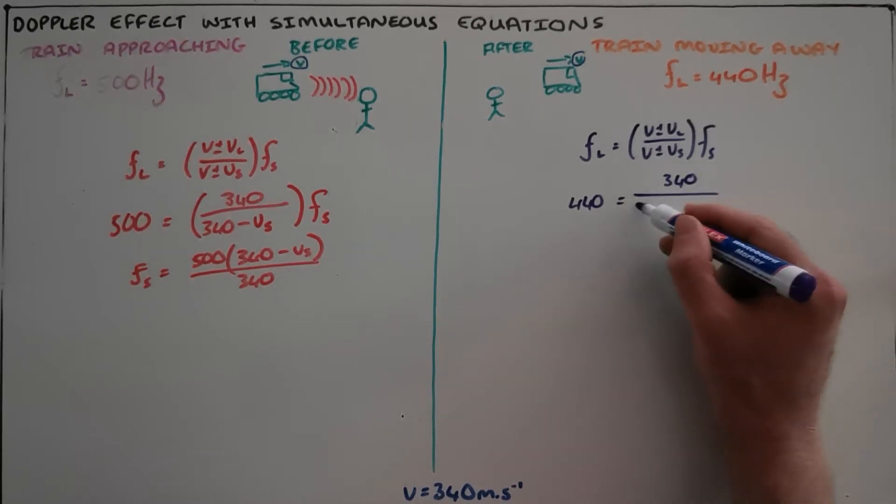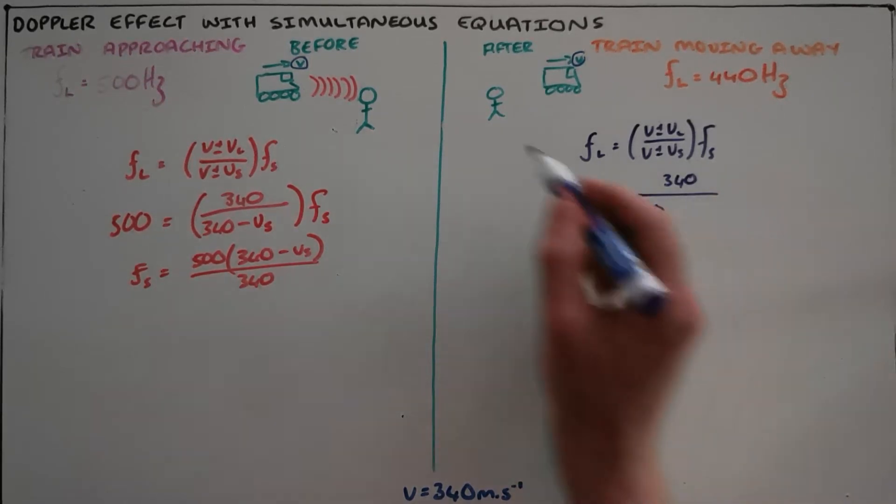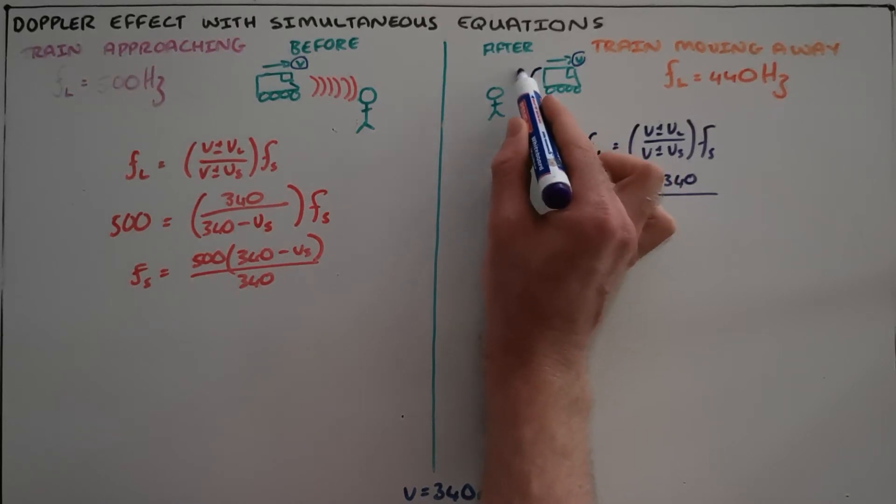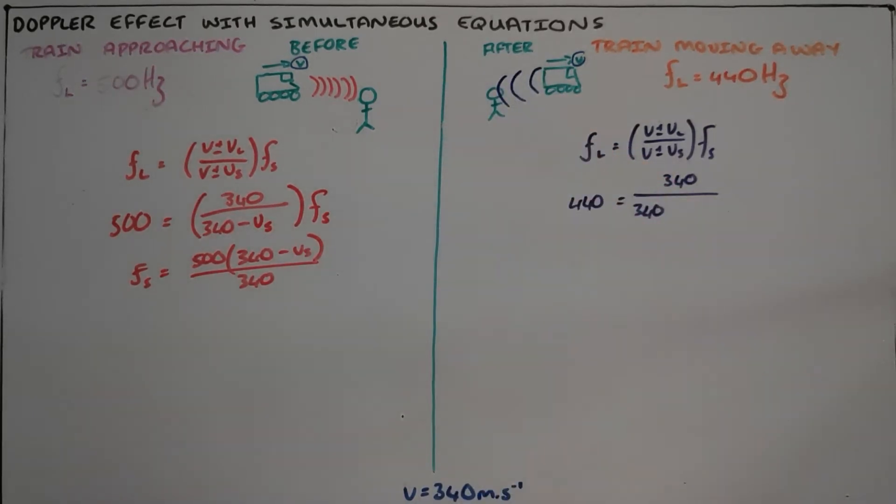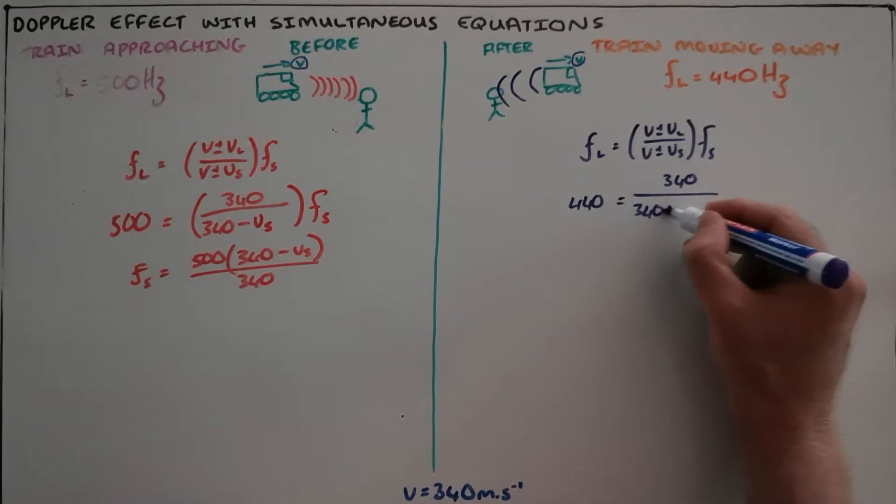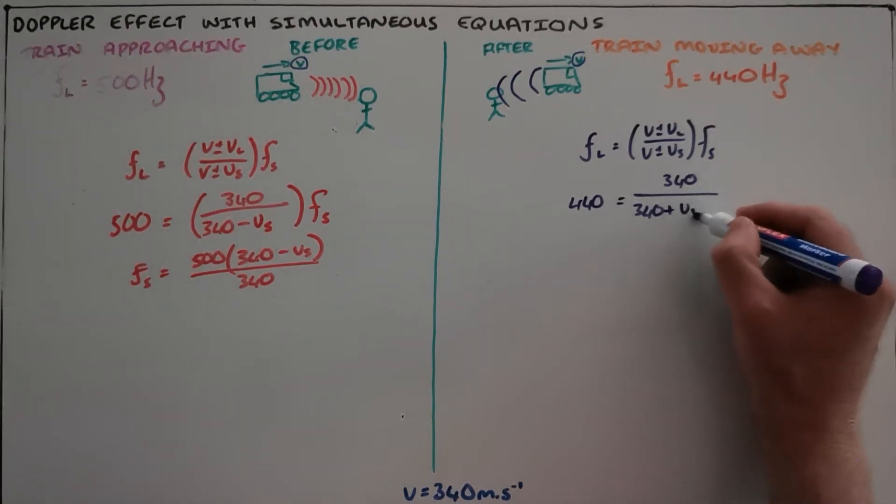And now because the train is moving away, we know that means those waves are going to spread out, to expand as they move away, and therefore we have a plus the speed of that source.